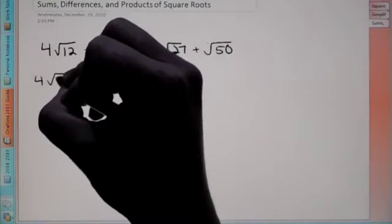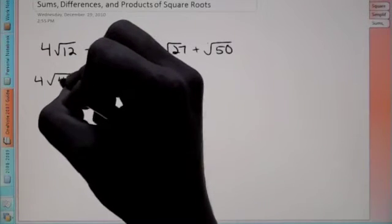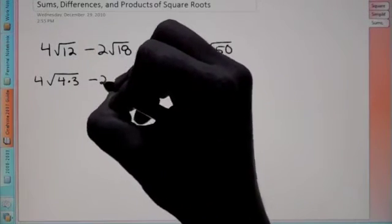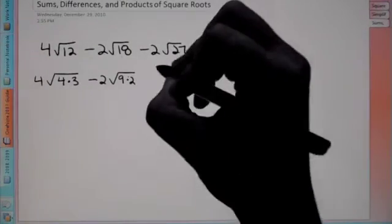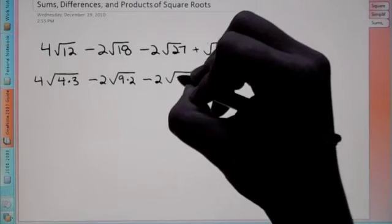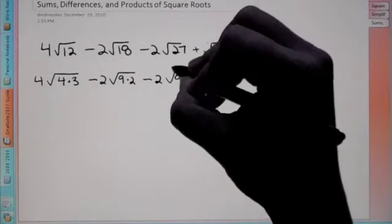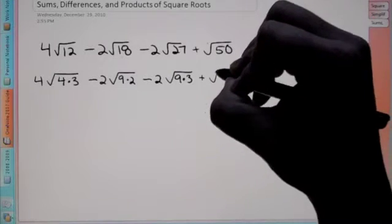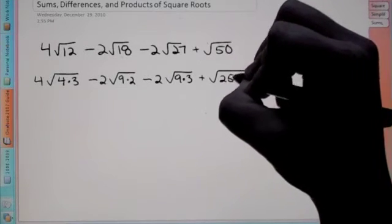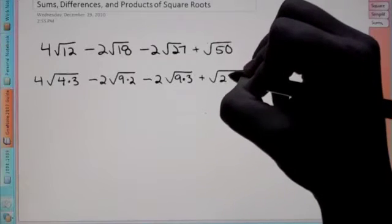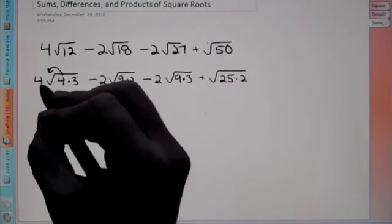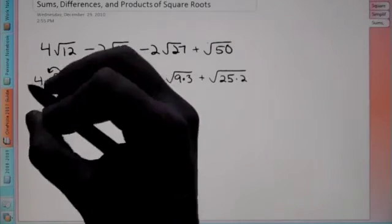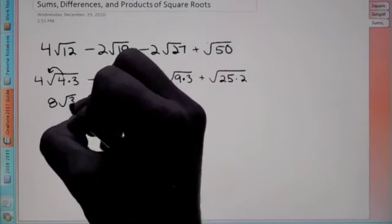I can break down 12 to be 4 times 3, because I know I can take a square root of 4. Here I can break down 18 to be 9 times 2. And 27 I can break down to be 9 times 3, because 9 is a perfect square. And lastly, we can break down 50 to be 25 times 2. Now when I take the square root, the square root of 4 is 2 — 2 times 4, because there's a 4 already on the outside — gives me 8, and there's still a 3 underneath.